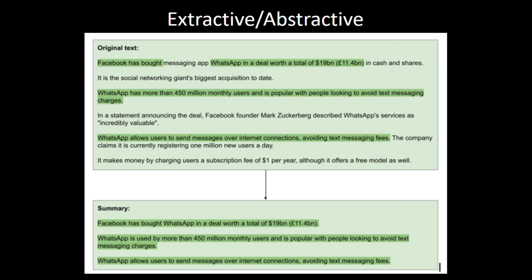There is also an extractive-abstractive summarization type, which is basically extractive but has a slight abstractive touch. It can be dangerous to summarize legal documents or court decisions with pure abstractive summarization because it can change the sense of the whole sentence. That's why sometimes extractive-abstractive summarization is used.